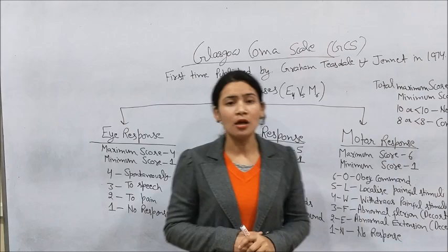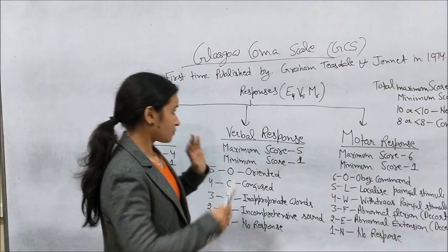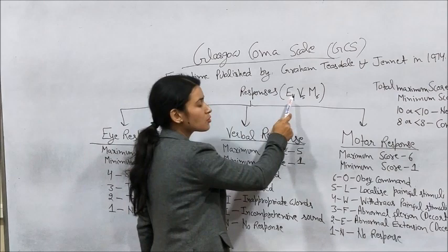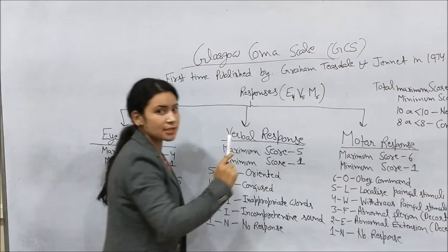We have three responses. The first one is eye response, the second one is verbal response, and the third one is motor response. Eye response has a total maximum scoring of four, verbal response is five, and motor response is six.